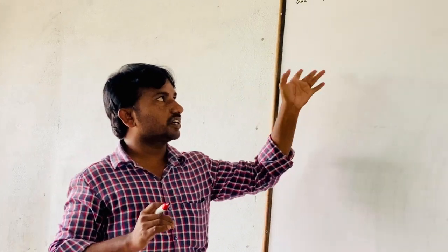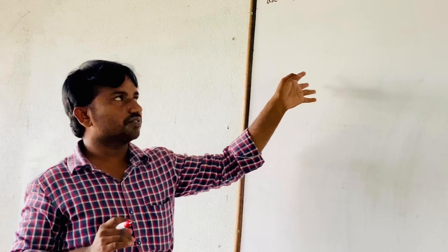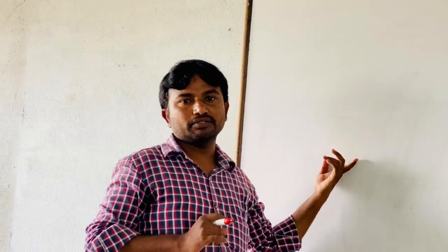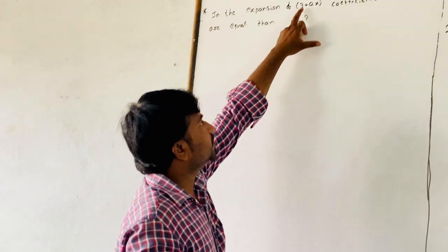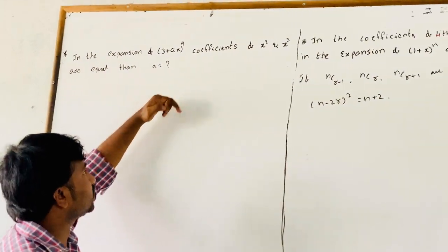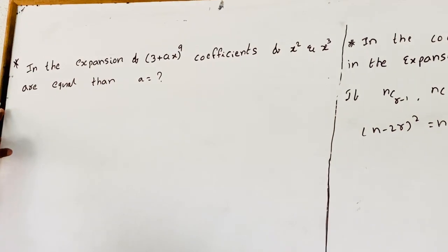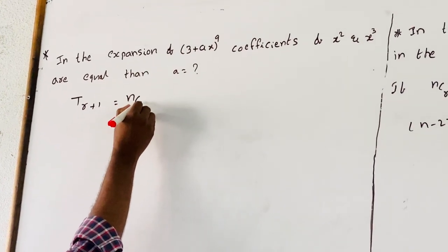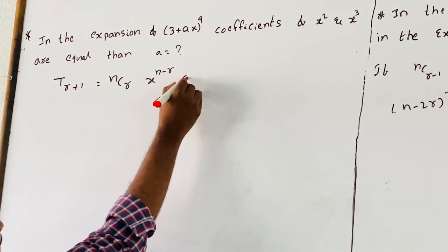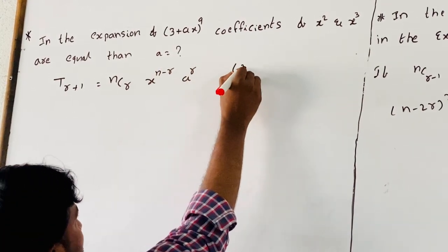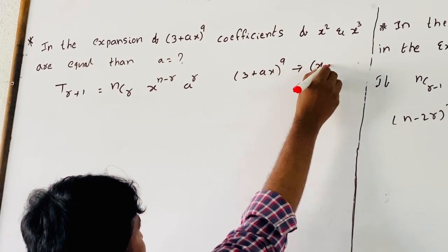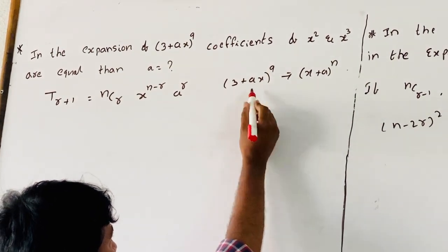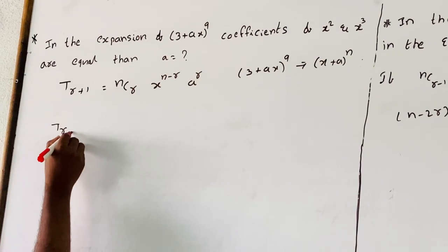Good morning students. For the Binomial Theorem, I already discussed the general term, coefficient, independent term, and coefficient in the previous class. Now, in the expansion of (3 + ax)^9, the coefficients of h² and x³ are equal — find the value of a. You know that the general term T(r+1) is given by nCr * x^(n-r) * a^r. Comparing (3 + ax)^9 with (x + a)^n, we have n=9, x=3, and a=ax.